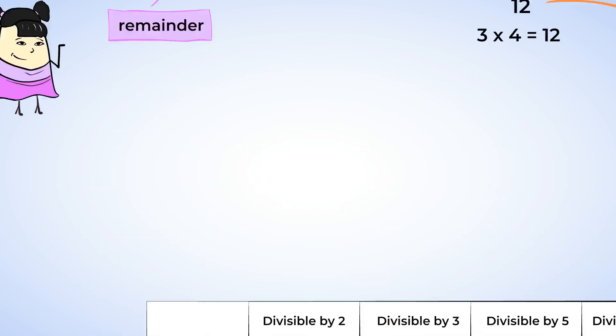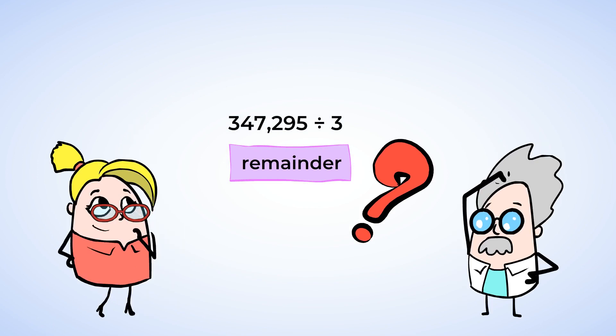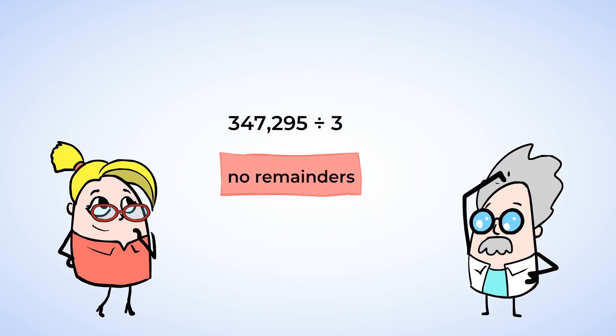Wait a second! That's the same mighty number we started with today. And now we can answer the question. 347,295 will not have any remainders when it is divided by 3, because it is divisible by 3. Awesome job!